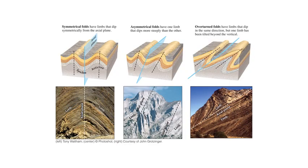Then we talked about crustal deformation — folding and faulting. Remember, if rocks are deep underground under a lot of pressure and where they're warmer, rocks will fold. We get an upfold, which is an anticline, and a downfold, which is a syncline. We can get folding layers, and we also get features like domes and basins when we have folding.